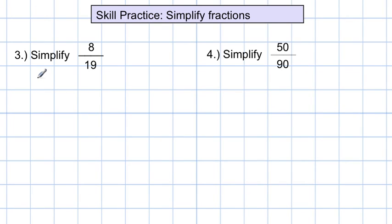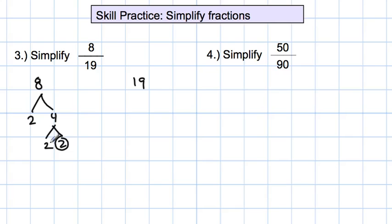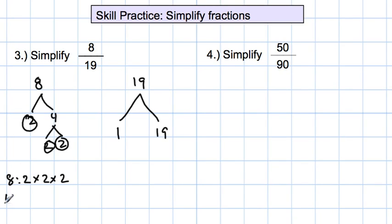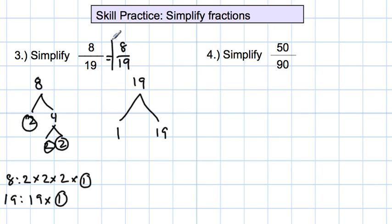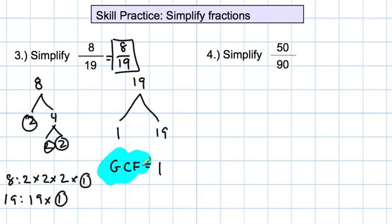Simplifying 8 over 19: 8 we already did — it's 2 times 2 times 2. Over here, 19 is already a prime number, so it's 1 times 19 — already a prime factor. They have nothing in common other than 1, so the greatest common factor is 1, and 8 over 19 is already in its simplest form. That answers the question: how do you know if a fraction is in its simplest form? If the greatest common factor is 1, it's already in its simplest form.